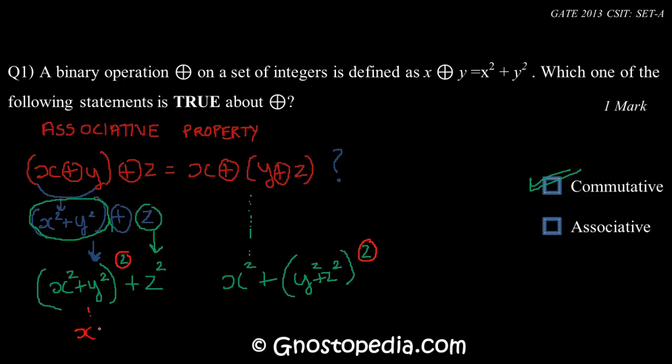Because on the LHS, x² the whole square actually becomes x to the power 4, while on the right-hand side it remains x² itself. And hence this voids the associativity property, and hence this operator is not associative.